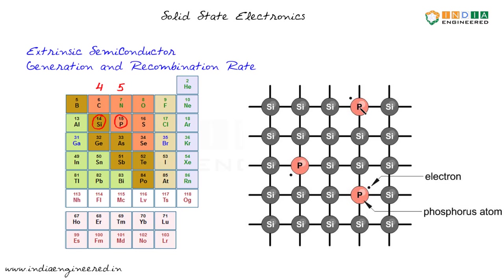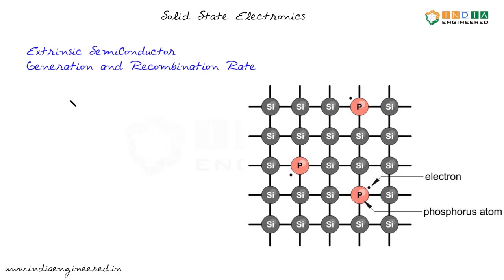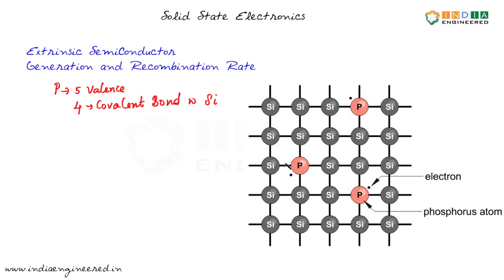Phosphorus has five valence electrons. Four of them will be in covalent bonds with four neighboring silicon atoms. As we can see, the four electrons are in covalent bonds with silicon atoms. But there is a fifth electron. This fifth electron is loosely bound to the phosphorus atom because it does not form a bond, and phosphorus already has eight electrons in its valence shell. So this fifth electron is loosely bound.